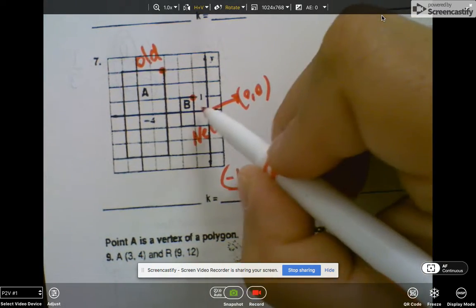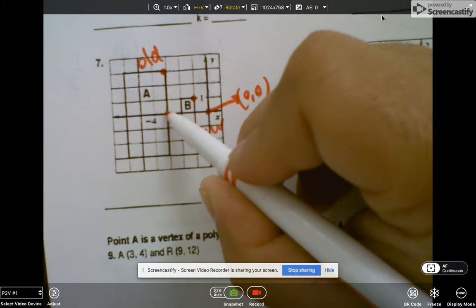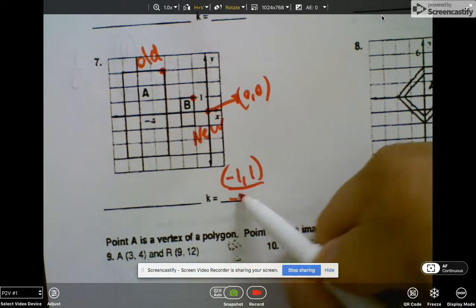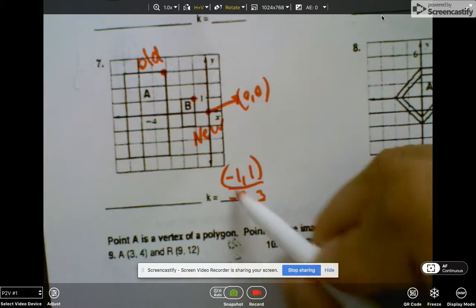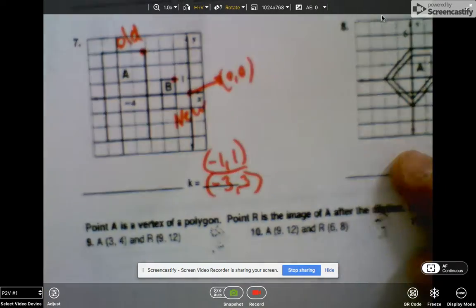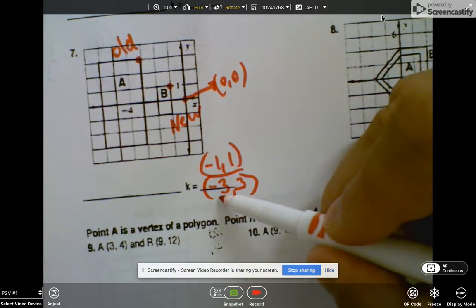Divided by the old B is negative one, two, three, one, two, three. Then I choose either my x's or my y's. I'll choose my x's, it's all the same.